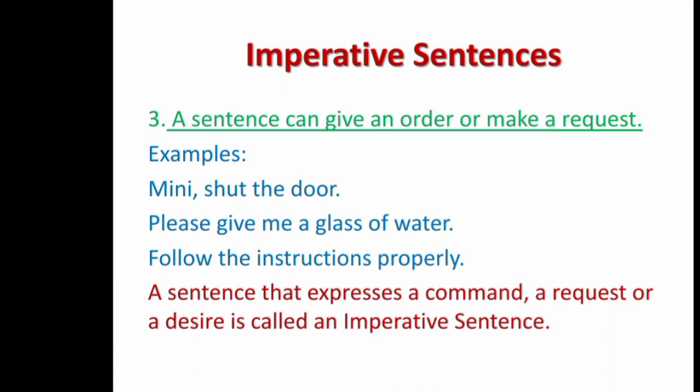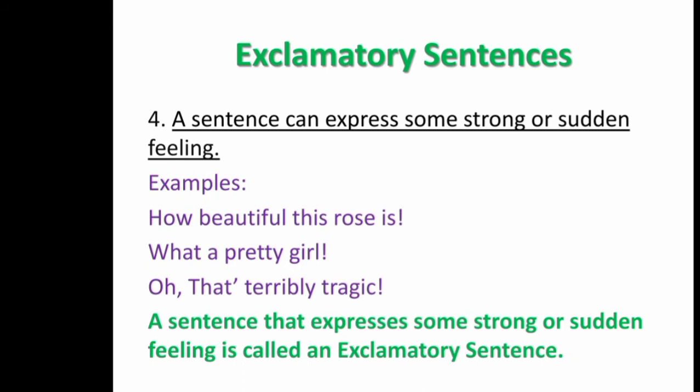So, a sentence that expresses a command, a request, a desire, or advice is called an imperative sentence. Next, exclamatory sentences. A sentence that expresses a strong, sudden feeling is called an exclamatory sentence. For example: 'How beautiful this rose is!' 'What a pretty girl!' 'Oh, that's terribly tragic!' All those sudden expressive feelings that come out in sentences are termed exclamatory sentences.